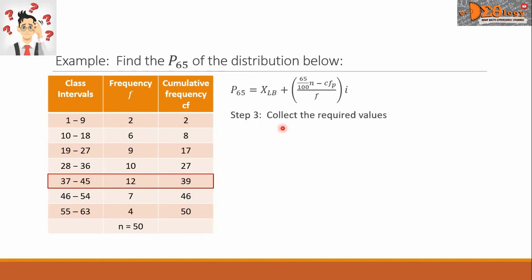For step 3, let us collect the required values of the formula. We started with that 65 over 100 times N from step 1, and the value is 32.5. X sub LB is the lower class boundary of the P sub 65 class. We write here 36.5. We got this value from the lower limit minus 0.5. So 37 minus 0.5 is 36.5.